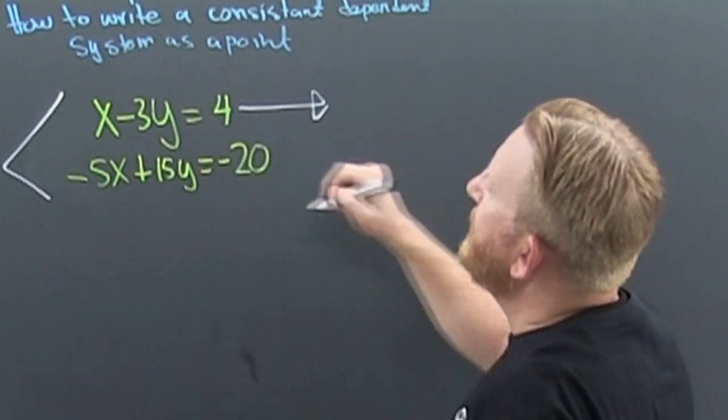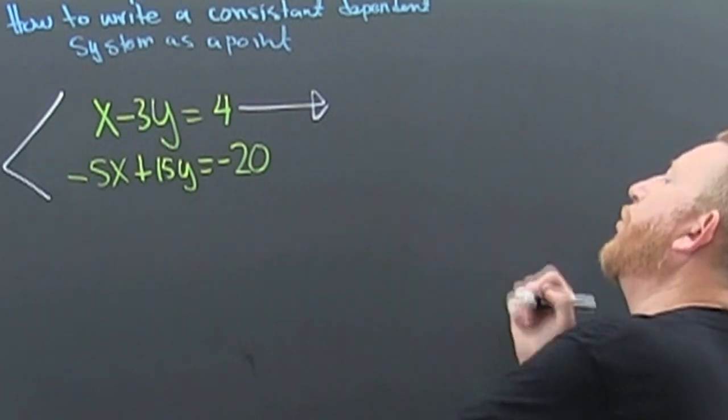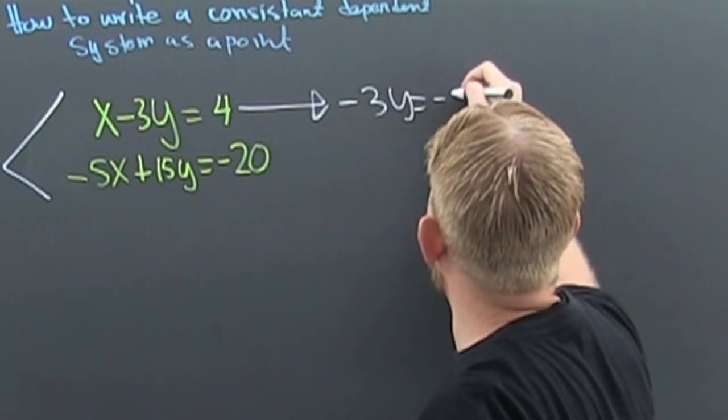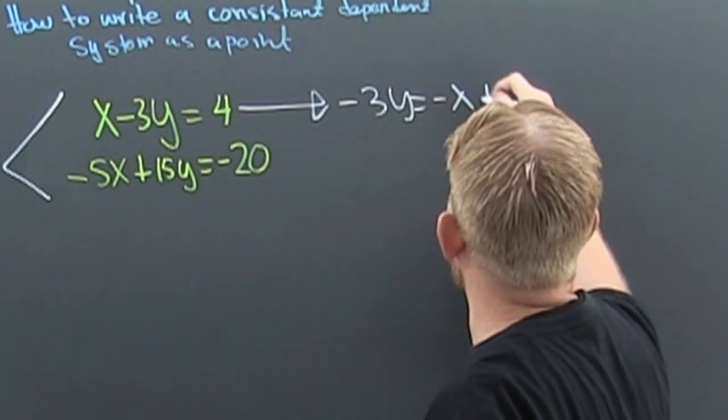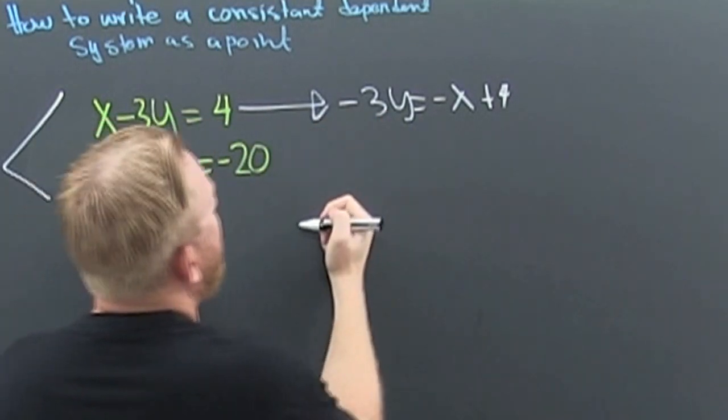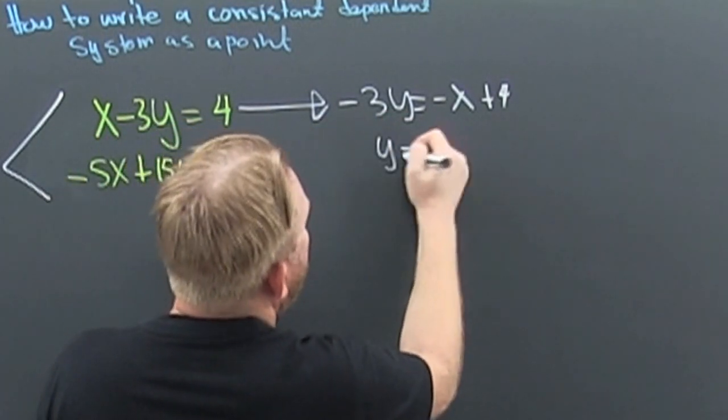So let me solve for my y. And I find that minus 3y is minus x plus 4. Sure. Now I'm going to divide everything by that minus 3.